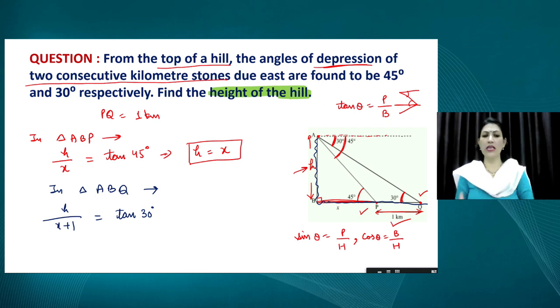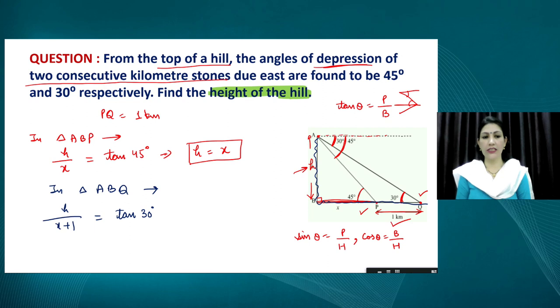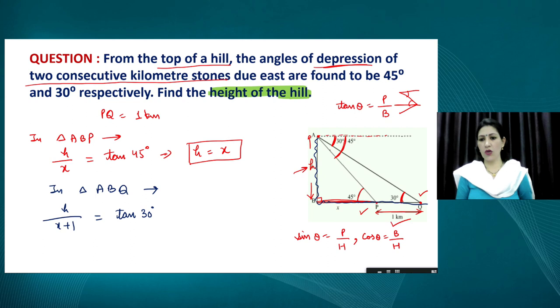Students often apply trigonometric values correctly but make a small mistake regarding slope — which line is steeper corresponds to which angle. I want to emphasize this concept: the steeper the line, the larger the angle it makes. This is a key point to avoid errors.